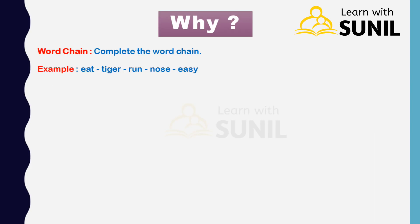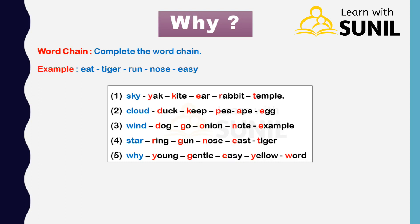Word chain activity. Complete the word chain. Example: eat — tiger — run — nose. First: sky — yak — kite — ear — rabbit — temple. Second: cloud — duck — keep — egg. Third: wind — dog — go — yellow — onion — note. Fourth: star — ring — gun — nose — east — tiger. Fifth: why — young — gentle — easy — yellow — world — you.